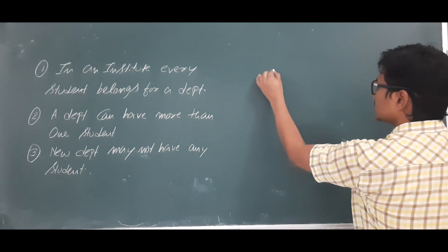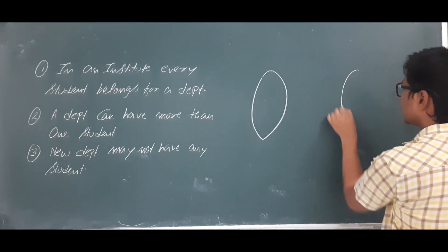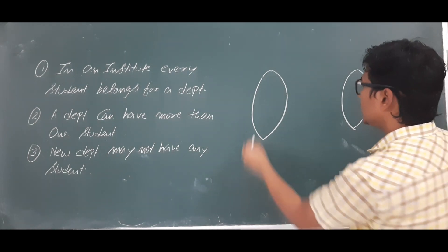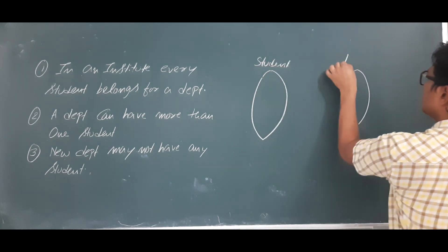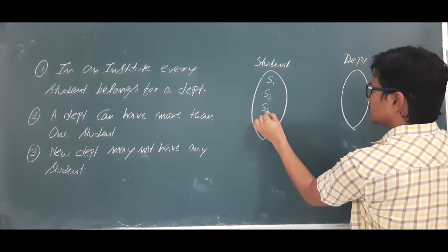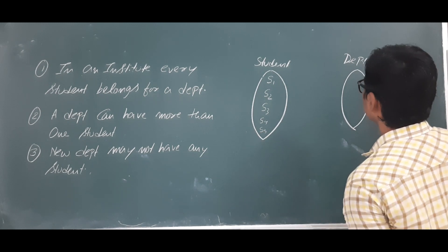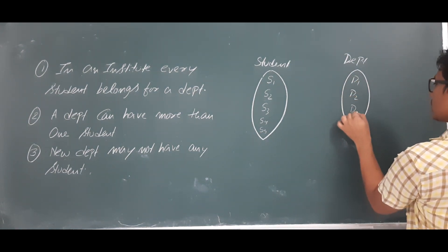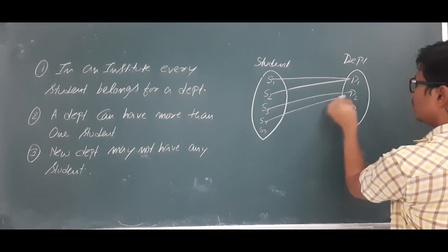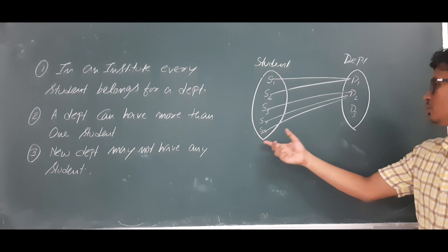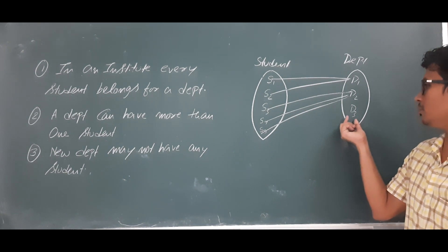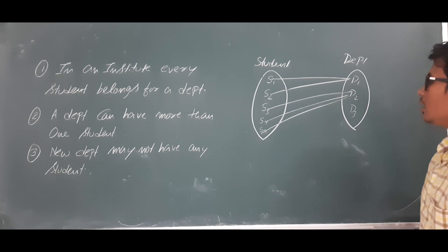So I have a student entity and a department entity. Before going for the diagram, let's take a small example so we can find the cardinality and participation for each entity. There are students numbered one through five, and three departments. Students one and two belong to department one; students three, four, and five belong to department two. Department three is a new department which has no students.